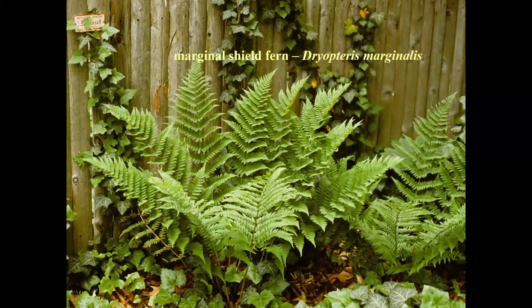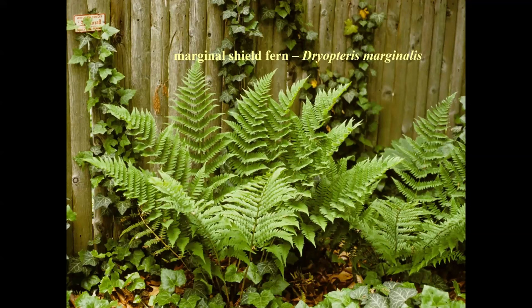Someone asked: what does 'not protected because it's invasive but native' mean? In New York State, all terrestrial orchids and all ferns are protected — except three: bracken, sensitive, and hay-scented — because they don't need protection; they're bulletproof. A colleague planted bracken fern and realized he made a mistake — you see it in the Adirondacks and it looks cool, but once you plant it you'll never plant it again. If you want something foolproof, you won't have anything else.